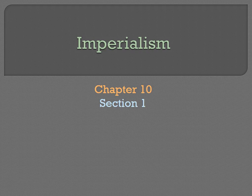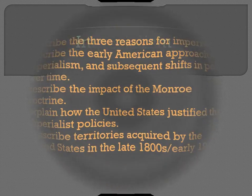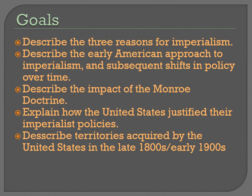Good evening. In today's lesson, we're going to take a look at imperialism, particularly American imperialism and some of the causes and consequences. Our goals are to describe the three reasons for American imperialism, describe the early American approach to imperialism and subsequent shifts in policy over time, describe the impact of the Monroe Doctrine, explain how the United States justified their imperialist policies, and describe territories acquired by the United States in the late 1800s and early 1900s.